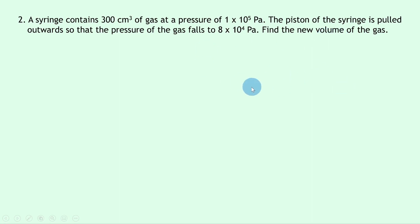So writing down what we know from the question, we're trying to find V2. We know the initial pressure P1 is 1 times 10 to the 5 pascals, also known as atmospheric pressure. The initial volume V1 is 300 centimeters cubed, and the final pressure P2 is 8 times 10 to the 4 pascals. So notice that the initial volume V1 is in units of centimeters cubed, which means our final volume V2 will also be in centimeters cubed.